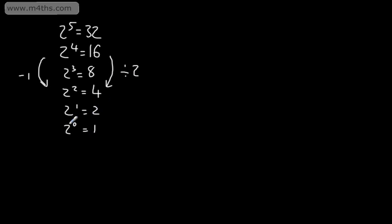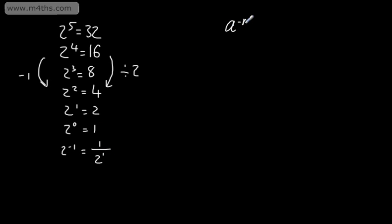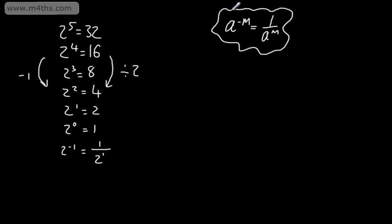We can extend this for negative powers. So subtracting 1 on the left-hand side would give us 2 to the negative 1. And on the right-hand side, I would need to divide by 2. So this is going to give me 1 divided by 2. I can write the law that a to the negative m is equal to 1 over a to the positive m. So if we have a negative power, we can write it as 1 over that to the positive power.